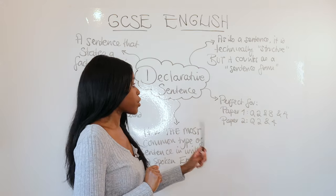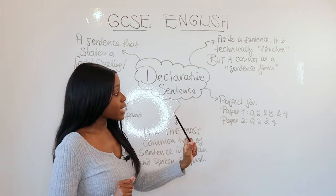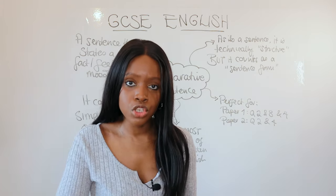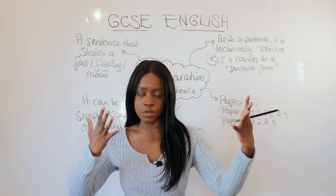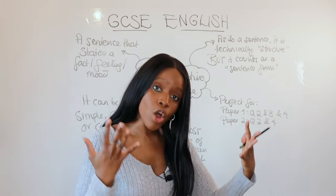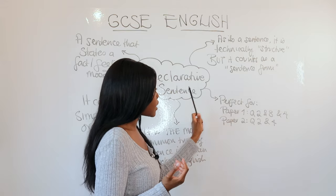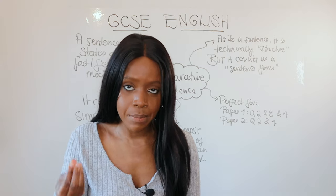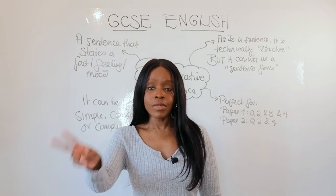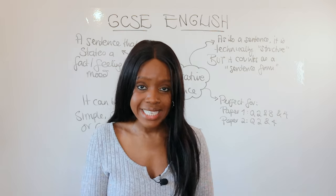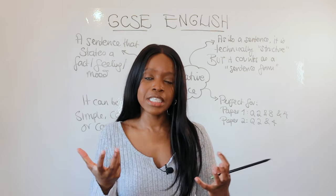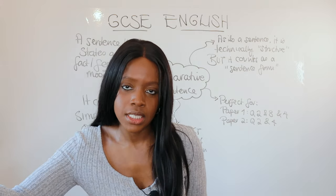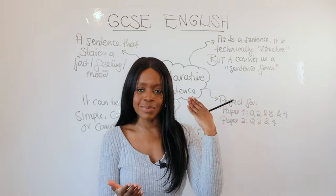This sentence type is also perfect for Language Paper 2. For question two — the summary question where you're finding similarities or differences between Source A and Source B — it works brilliantly. It's also perfect for question four, the writer's viewpoints and perspectives question, because the second bullet point always asks you to comment on the writer's methods — methods means language and structure — and your go-to is simply a declarative sentence.